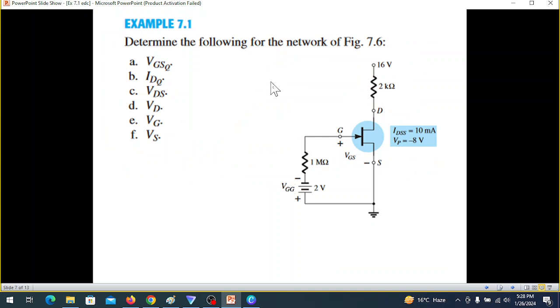Now we come to Example 7.1. Determine the following for the network: this is the network given, and we have to find VGSQ and IDQ, then VDS and VD, VG, and VS.